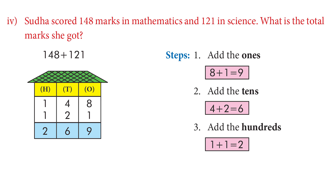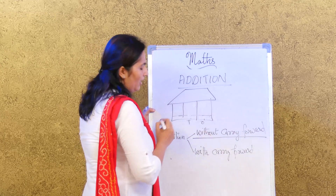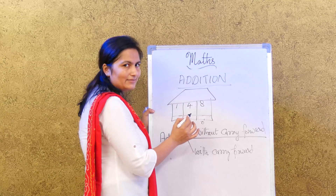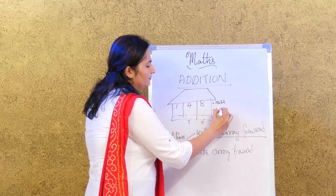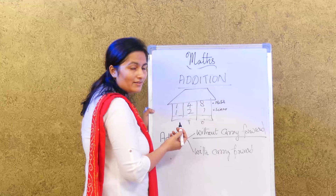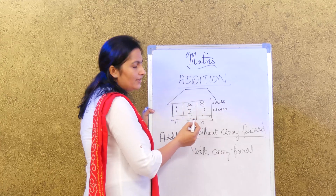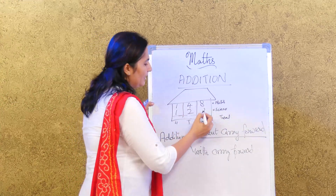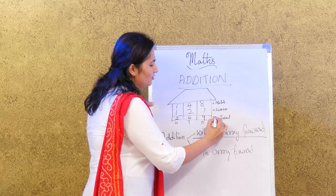The next example: Sudha scored 148 marks in mathematics and 121 in science. How many marks did she get in total? Sudha got 148 in mathematics and 121 in science. We need to find the total. So we add: 8 plus 1 is 9, 4 plus 2 is 6, 1 plus 1 is 2. So we got the answer 269.